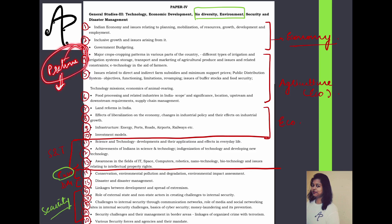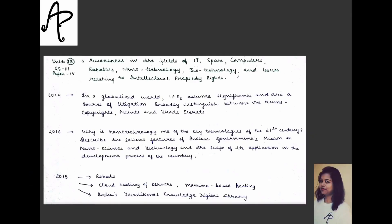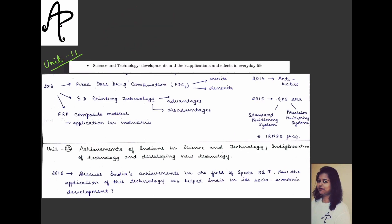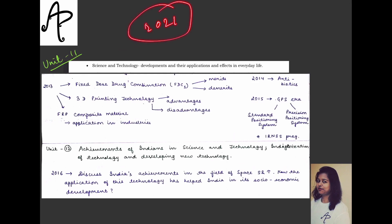In the prelims syllabus, however, the science and technology portion specifically covers basic science — so you should know physics, chemistry, and biology basics very well, as prelims questions are becoming difficult. Especially in 2021, examples show how basic questions are asked. The application and technology part, which is current-affairs oriented, is what you see in mains.